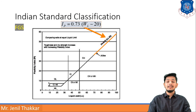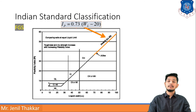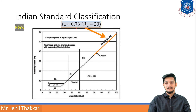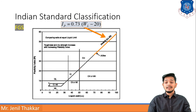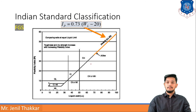The A-line has the equation: IP = 0.73 × (WL − 20). If you want to know the plasticity index, you need to know the liquid limit WL. If the liquid limit value is greater than 60%, the soil may be CH or MH. CH means clay with high plasticity, and MH means silt with high plasticity.